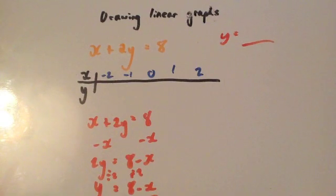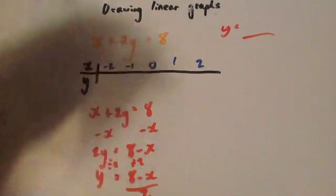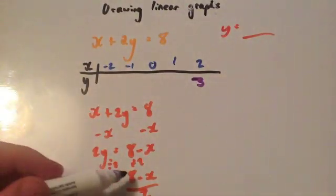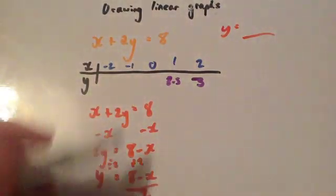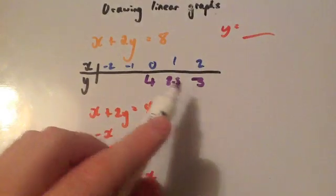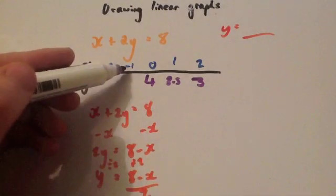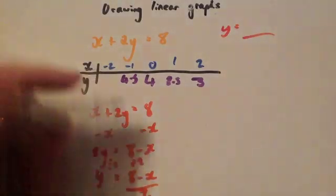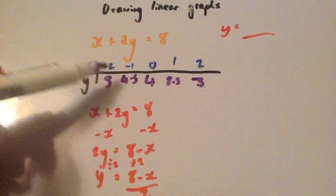Let's work out our coordinates. Starting with the positive values: when x equals 2, 8 minus 2 is 6 divided by 2 gives 3. When x equals 1, 8 minus 1 is 7 divided by 2 gives 3.5. When x equals 0, 8 minus 0 is 8 divided by 2 gives 4. Notice each time we move across, it goes up by 0.5. When x equals minus 1, 8 minus minus 1 is 9, half is 4.5. When x equals minus 2, 8 minus minus 2 is 10, half is 5. So our coordinates are (2,3), (1,3.5), (0,4), (-1,4.5), and (-2,5).